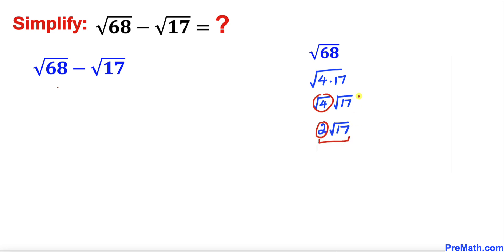Therefore, I am going to replace √68 by 2√17. Let me write it down: 2√17 - √17. I'm going to leave this one as it is. Now we can see that √17 is in common.